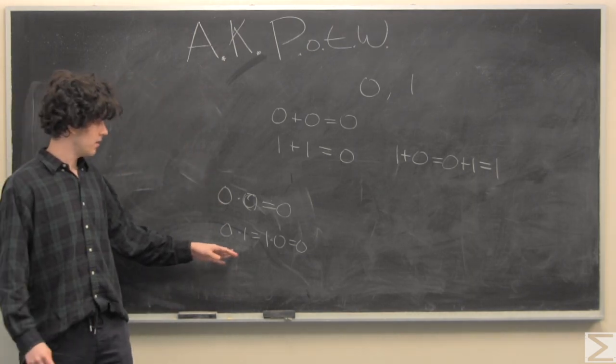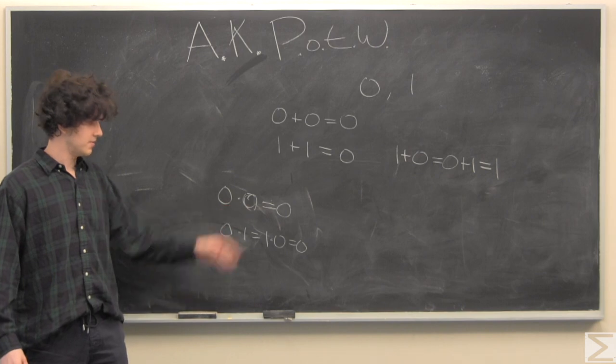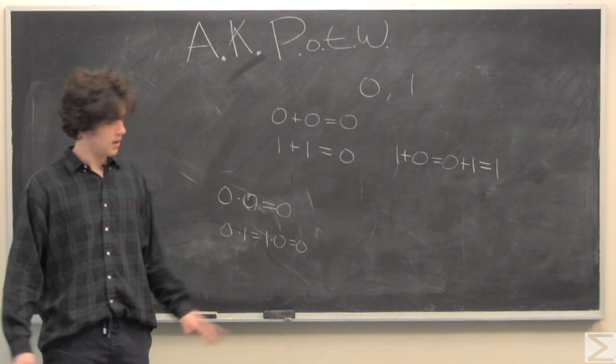So, we have our multiplicative identities for 0, or identity for 0.